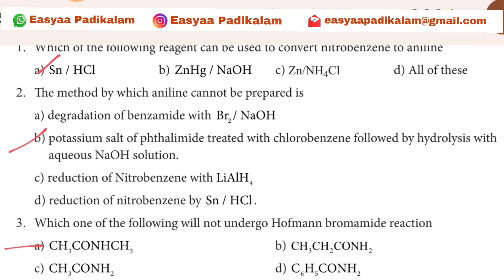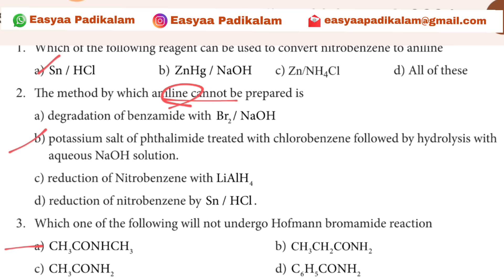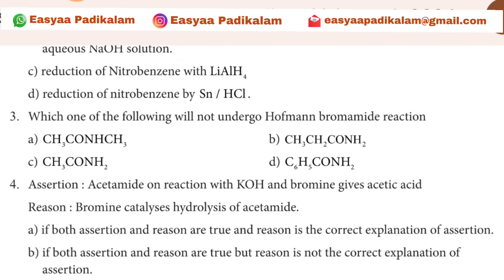Question 2: By which method can aniline not be prepared? Aniline — by line or salt, line or potassium salt. Aniline can be prepared from potassium salt.